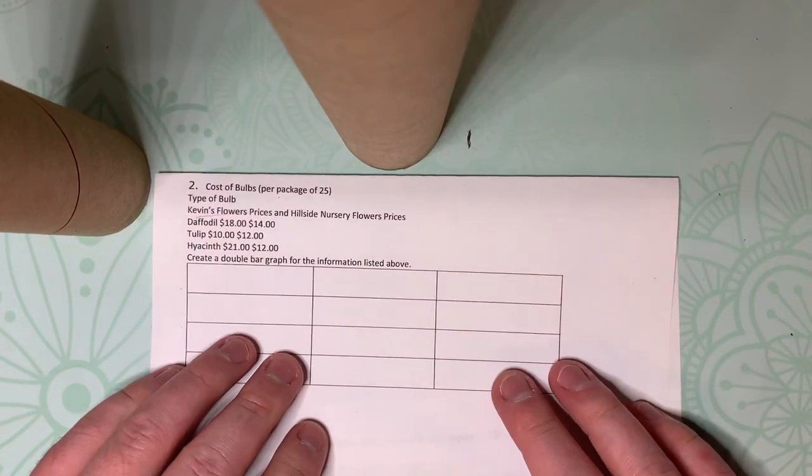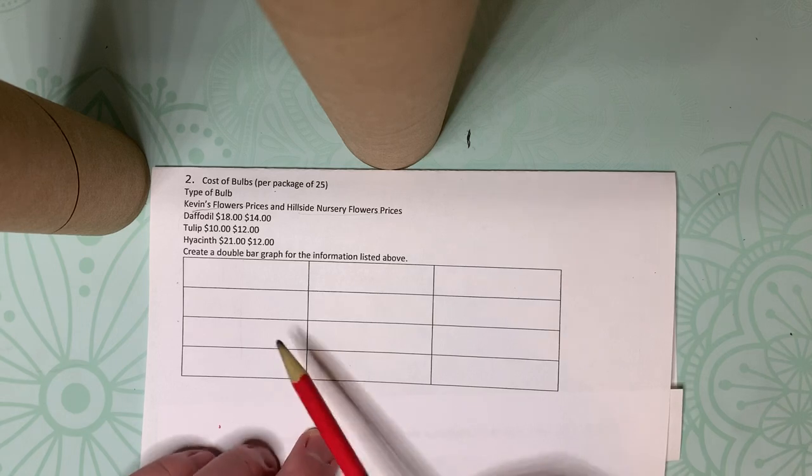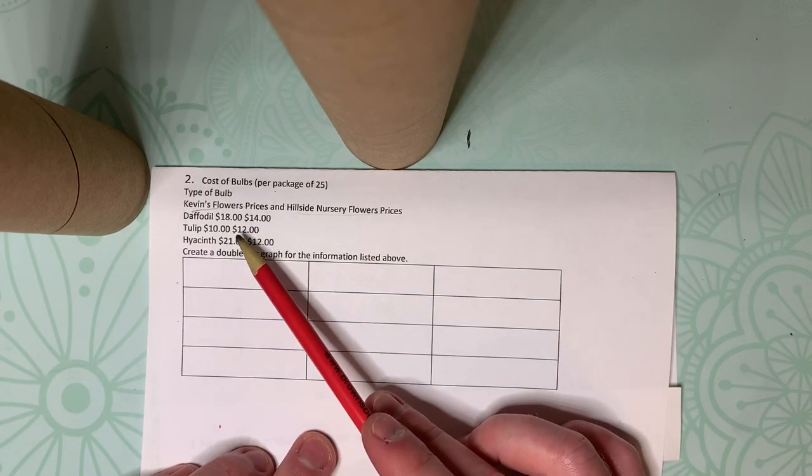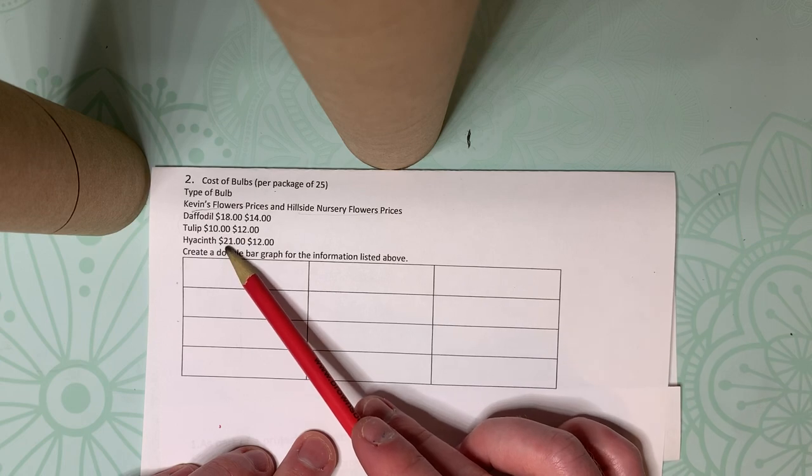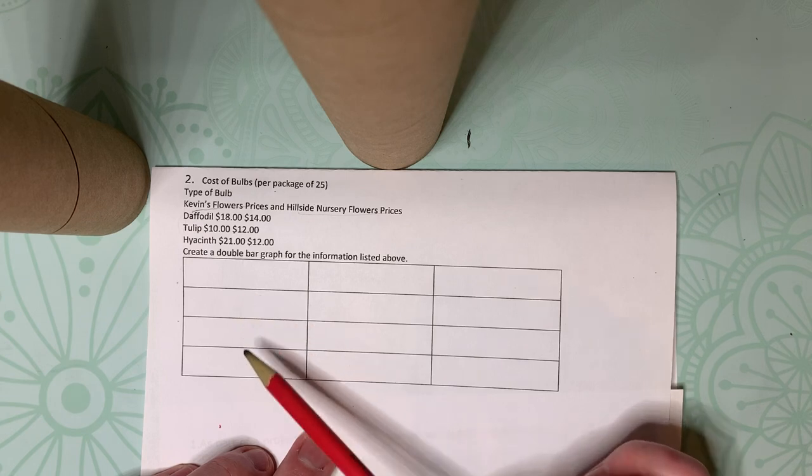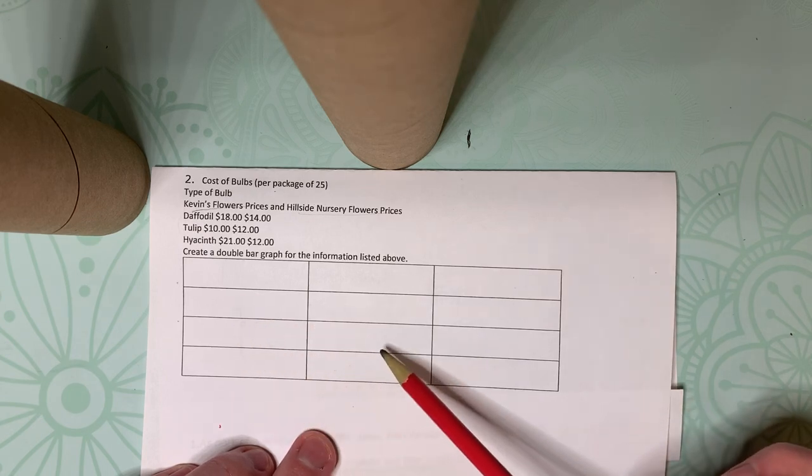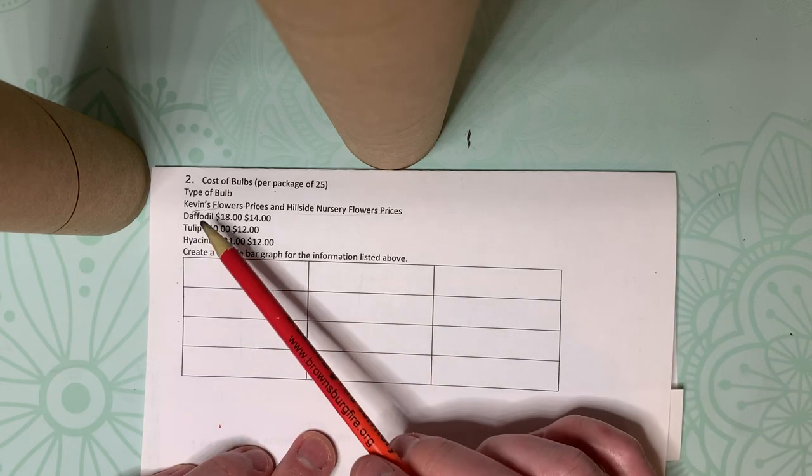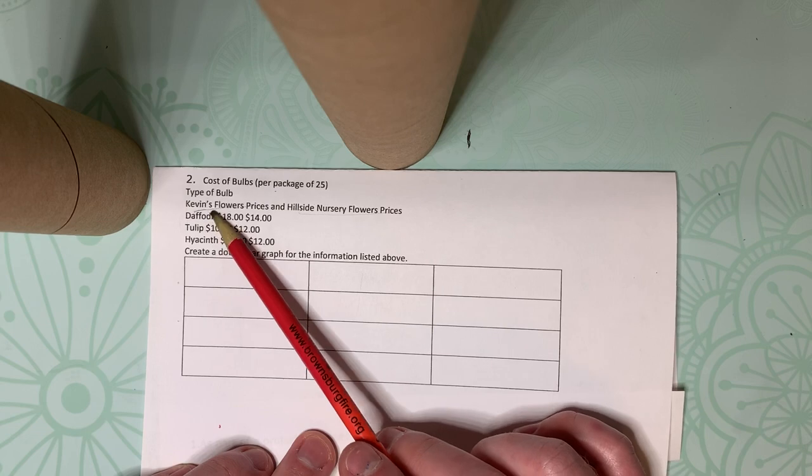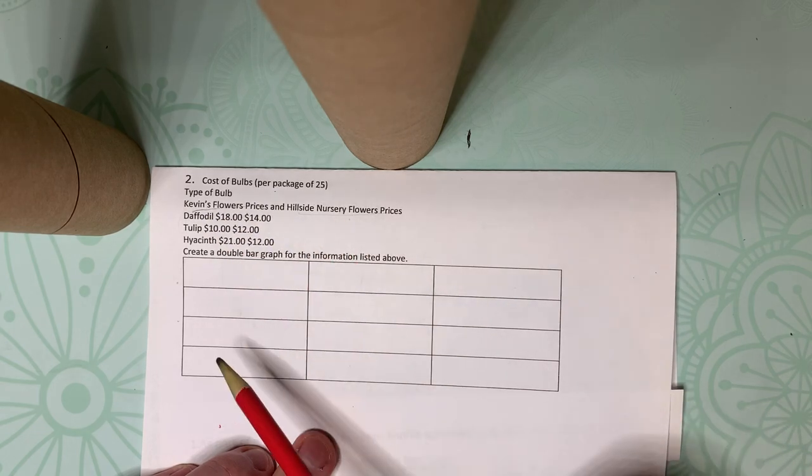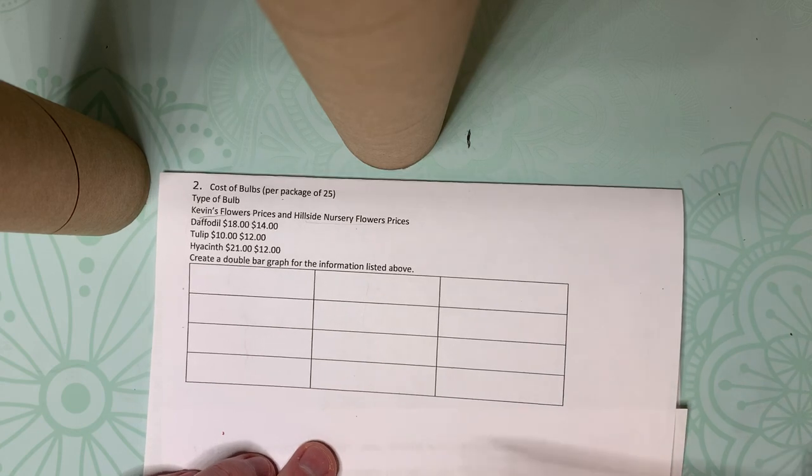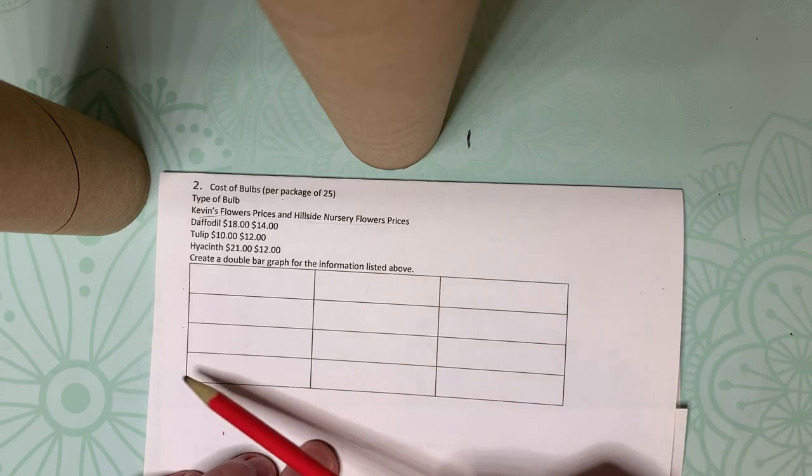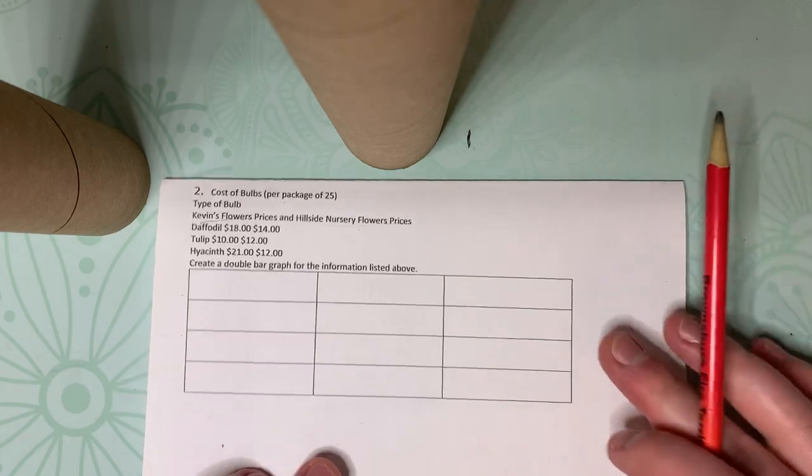So, the bottom one is yours to do. And so when you're doing this, it gives you three. So it gives you the daffodil, the tulip, and the hyacinth. And as you do those, you'll have, this can be your hyacinth, this can be your tulip, daffodil. Make sure you split it in half, and then go from there, because you're only working with two different shop prices. So Kevin's flower prices and Hillside Nursery. And then once you go through those, that'll be your graph. Make sure you label at the bottom and on the sides here. And you'll be good to go from that one.